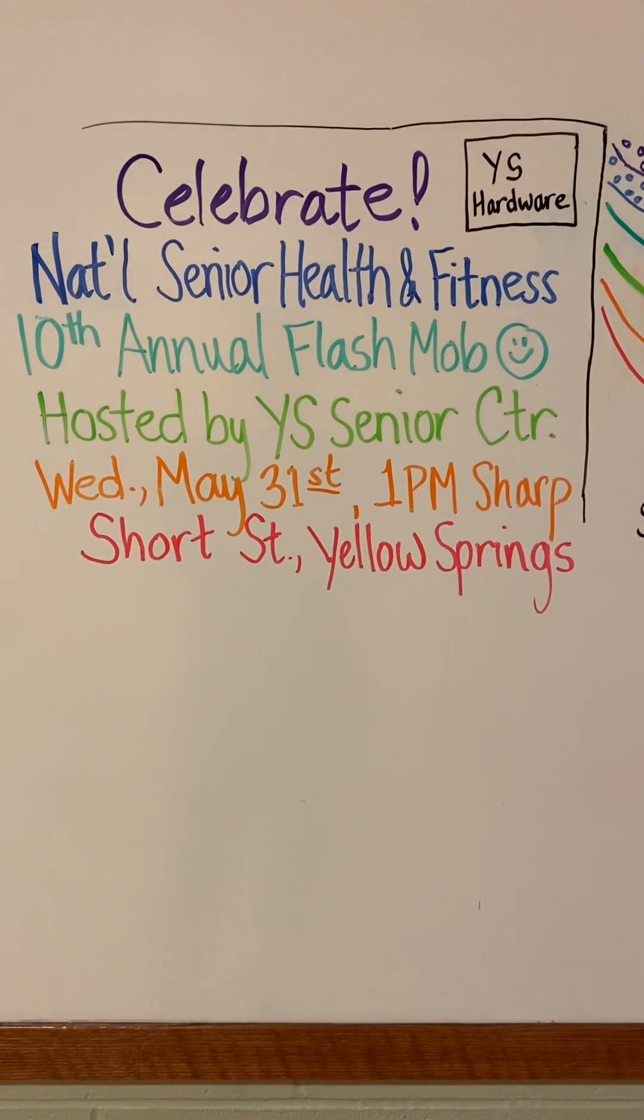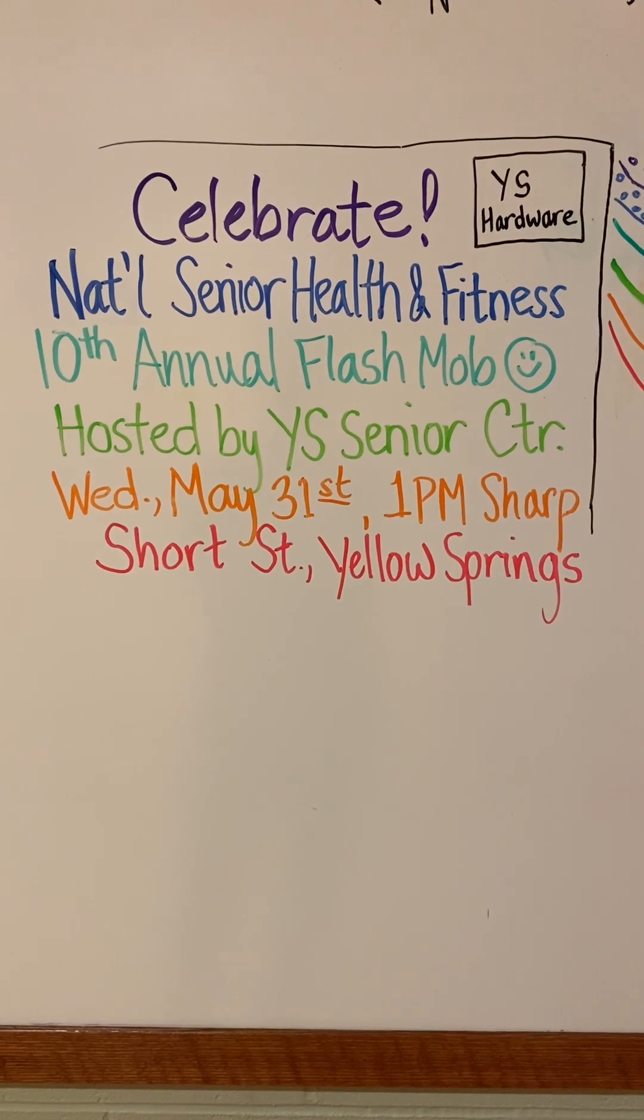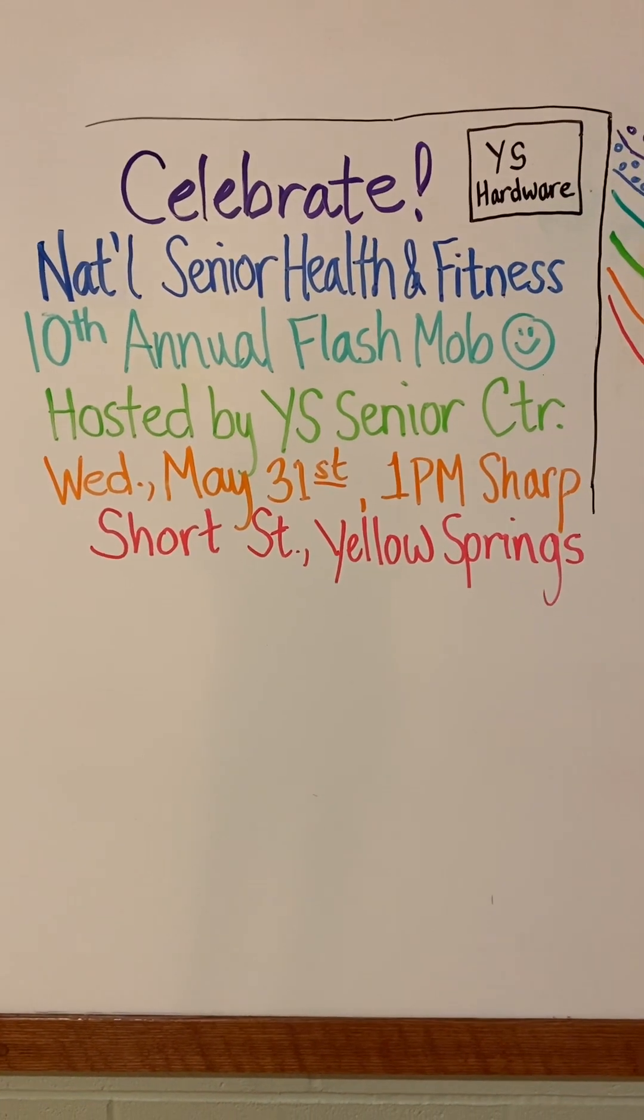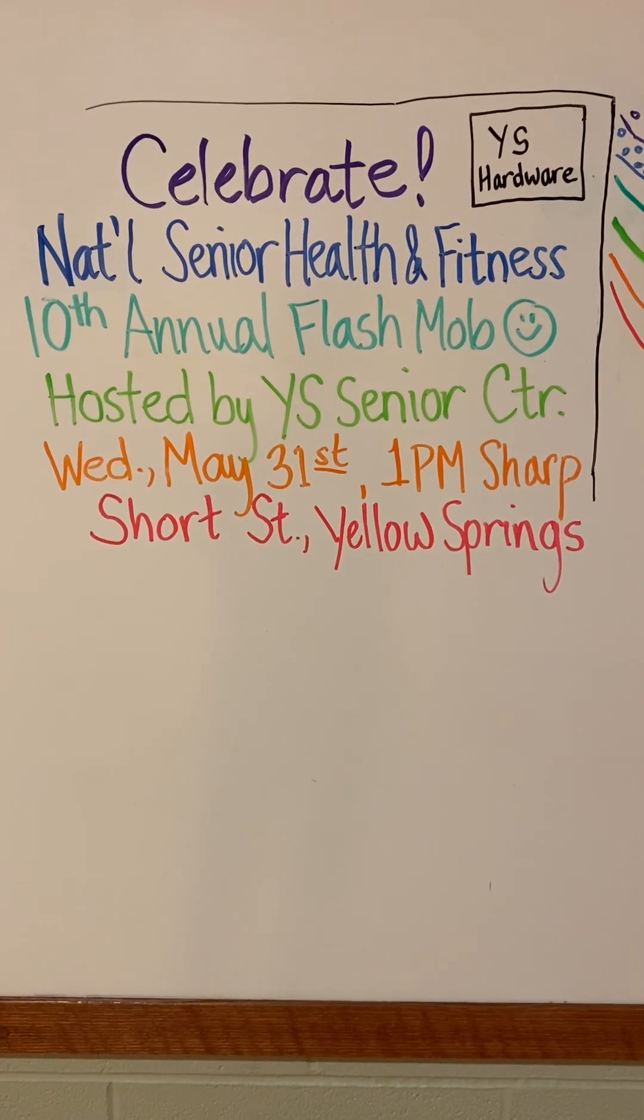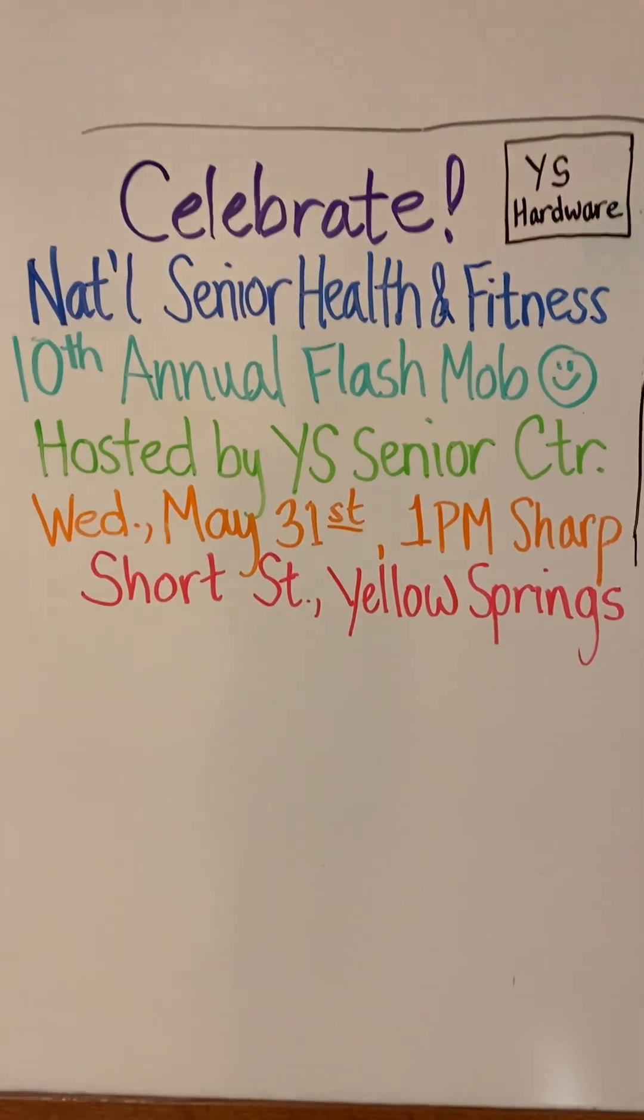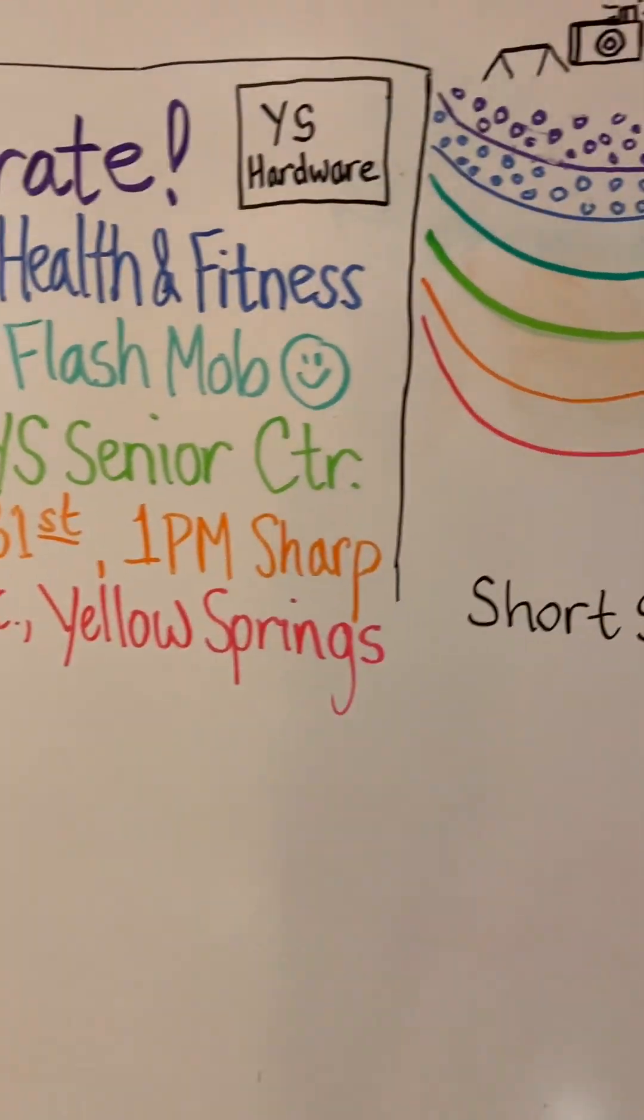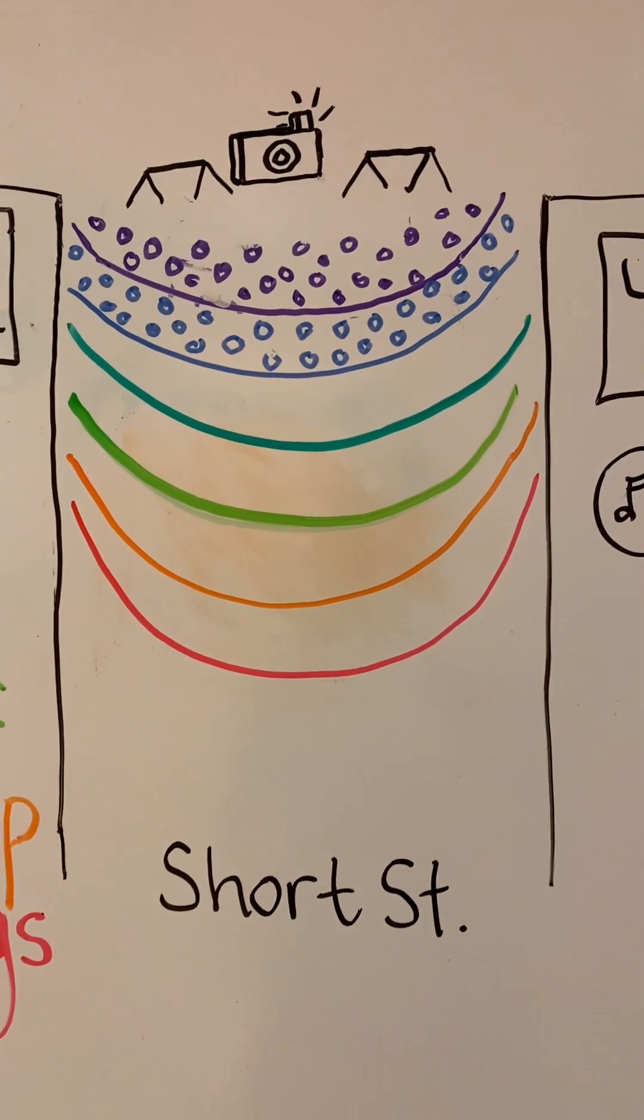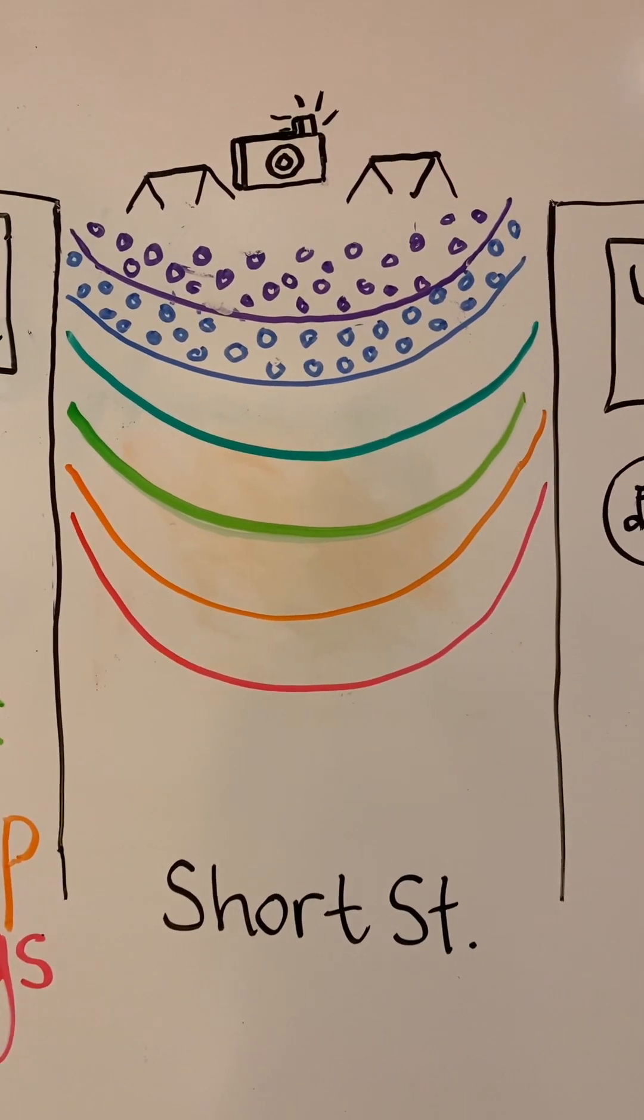Better yet, check in at the Senior Center at about a quarter till and start walking out near Short Street soon after. You can use the restrooms at the Senior Center, and we're all going to amble on over to Short Street, which will be blocked off for our 10th Annual Flash Mob.